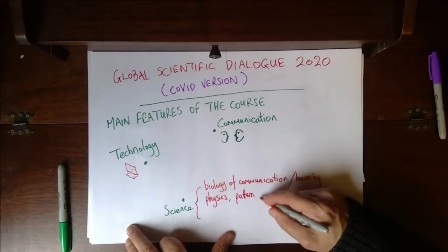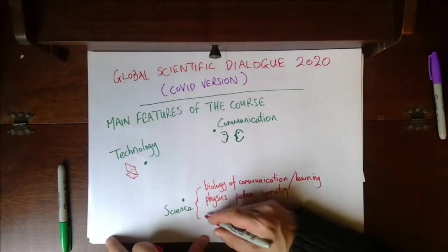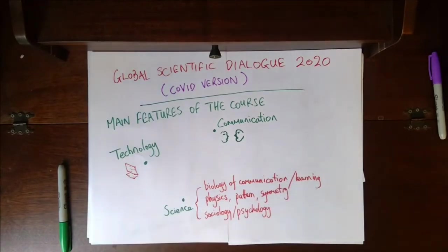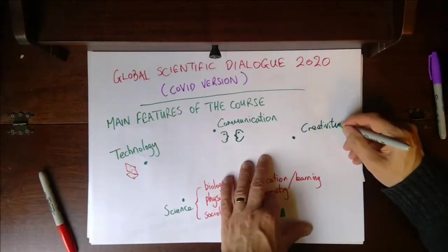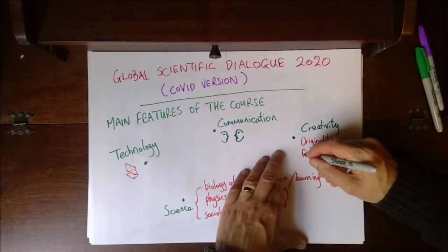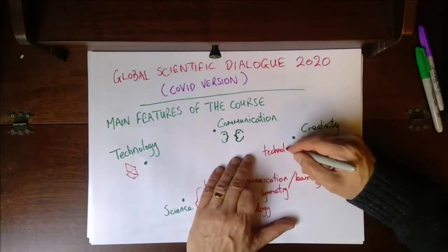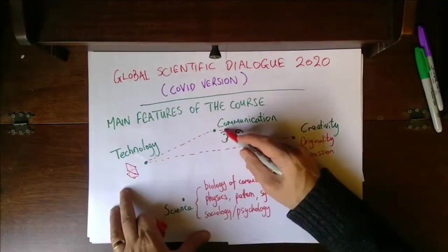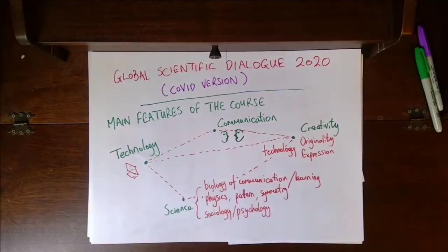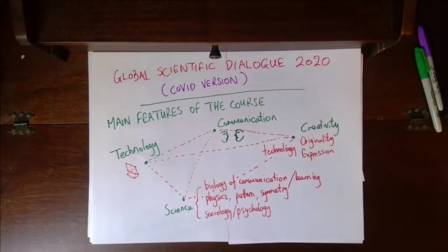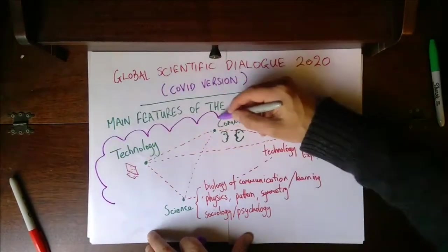Thirdly, science, because it's important that we understand scientifically both what we do in education and the scientific connections to the subjects that we study. And finally, creativity, which is connected to technology. And technology is connected to communication. And communication is connected to science. And science is connected to creativity.